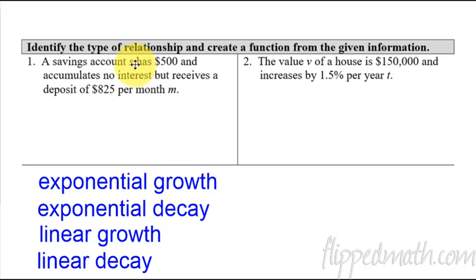Here we have a savings account, S and M are the variables. It's going to start off with $500, accumulates no interest, but it is going to receive a deposit of $825 per month. So what you're looking for is, are we going to be multiplying by a number or are we adding a number? If it's $825 every single month, we're adding $825 per month. So that means this is linear and it's gaining, so it's linear growth.